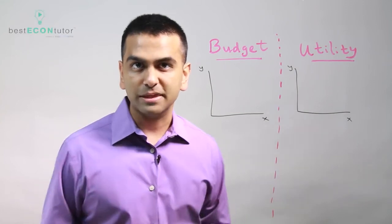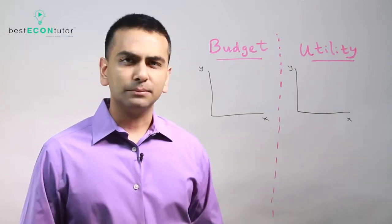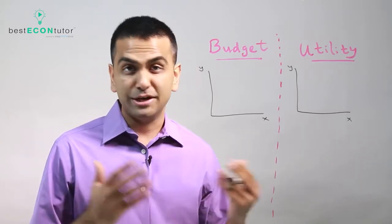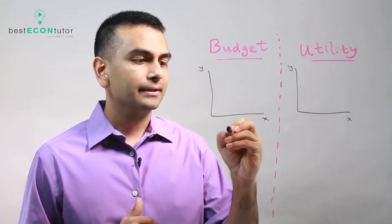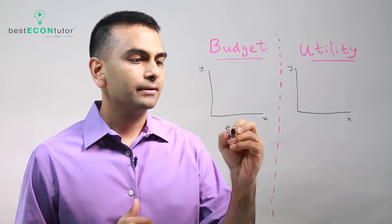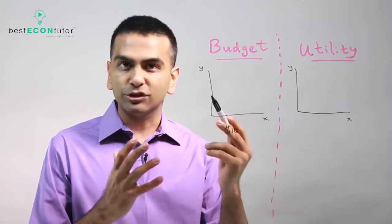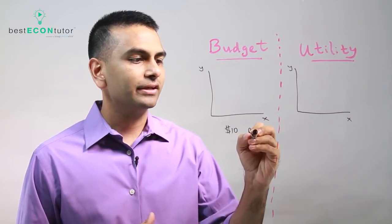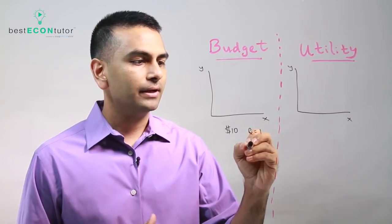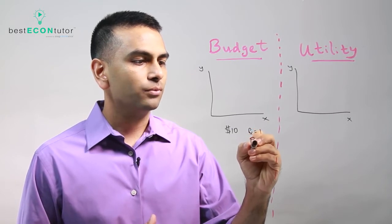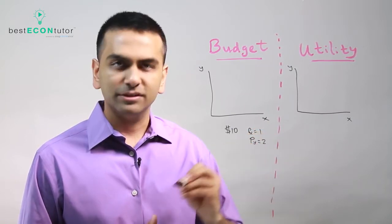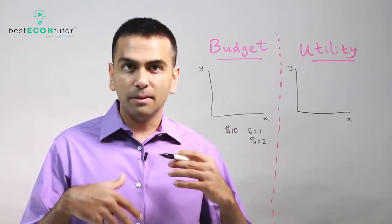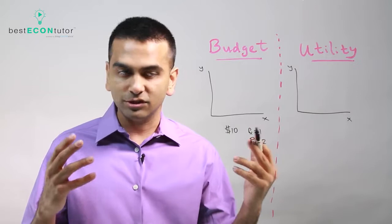Let's talk about the budget constraint. Suppose you're in a situation where you have a ten dollar income and you can buy good X or good Y — apples or oranges for example. Let's say the price of good X is one dollar and the price of good Y is two dollars. Now let's think about all the possible bundles that you're able to consume.